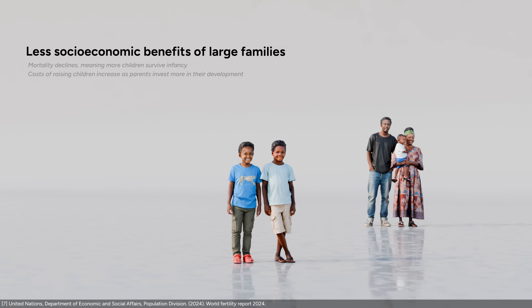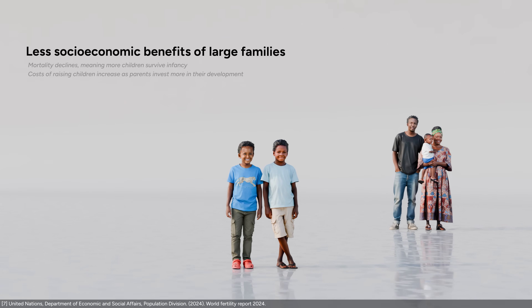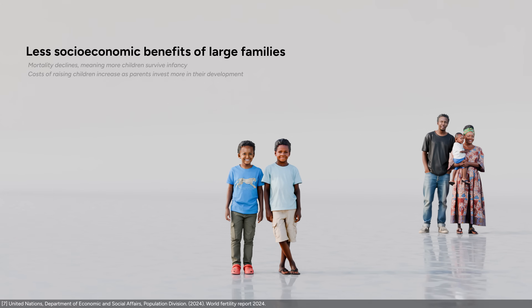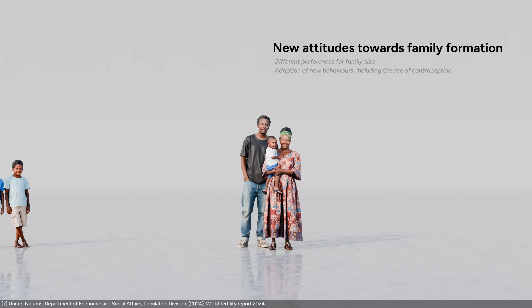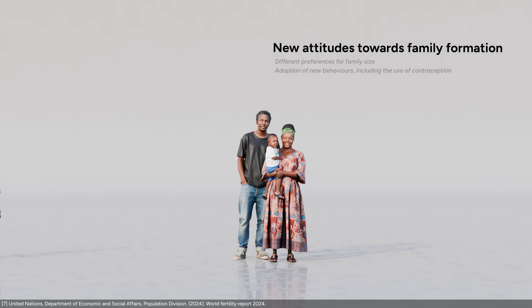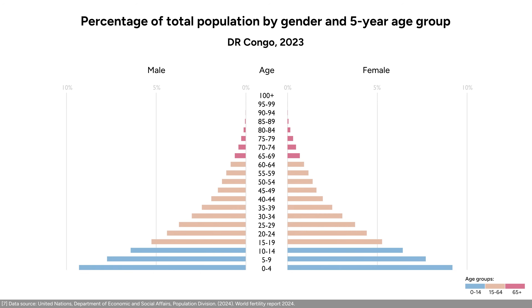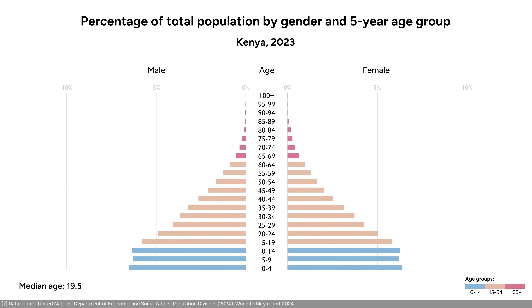As countries develop and industrialize, they transition to low fertility rates mainly for two reasons. One, the benefits of having many children go down — child mortality declines, meaning parents can be more confident their children will survive until adulthood, and child labor becomes less common. And two, preferences for the desired family size change, with the use of contraception becoming more common. Despite lowering fertility rates, the population of Kenya is projected to double by the end of the century to over 100 million people. Kenya's age pyramid is older than the DR Congo's, with fewer children at the bottom and a median age of 19.5 years.